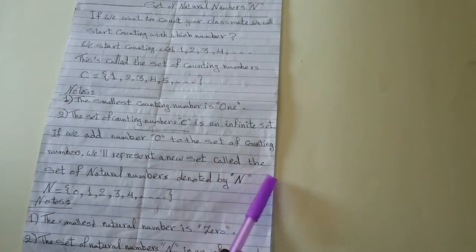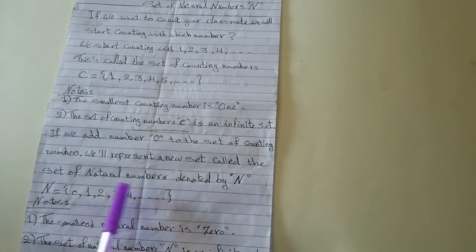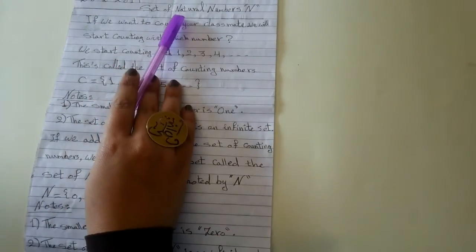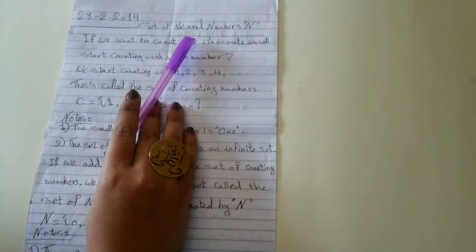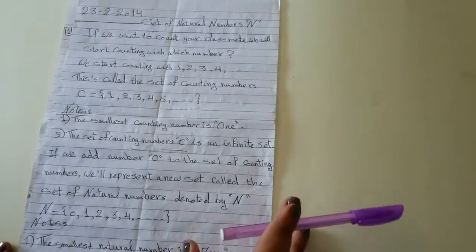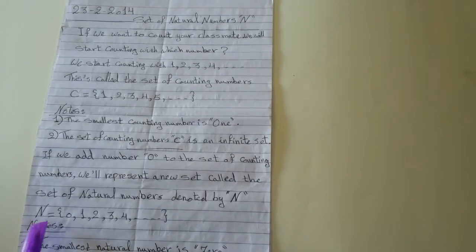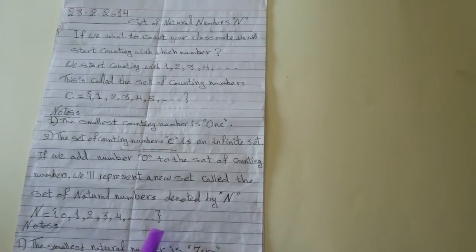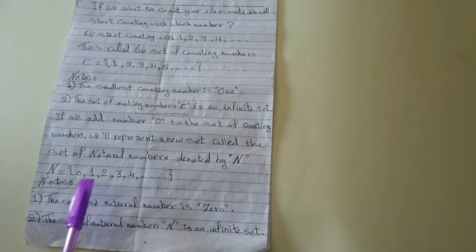This is a new set called the set of natural numbers. And this is our lesson today. The name of our lesson, set of natural numbers, or N. N equals between two braces, zero, one, two, three, four and so on.